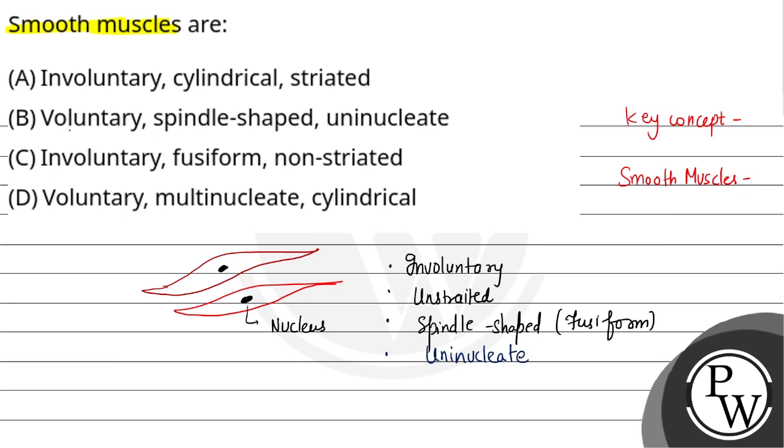Now see the statement. It is voluntary, so B or D is incorrect. This is involuntary. This is not in cylindrical shape, it is in fusiform shape or spindle shape. And these are non-striated or unstriated muscles.